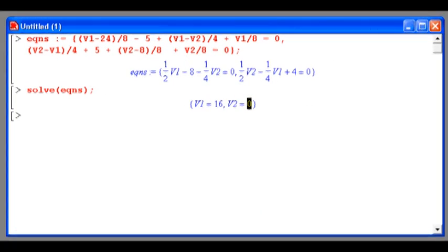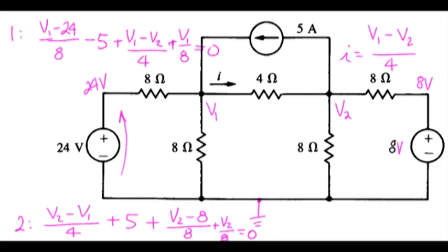So V1 is 16, V2 is 0. Coming back here, I'll bring this equation down. So I is 16 over 4, or 4 amps.